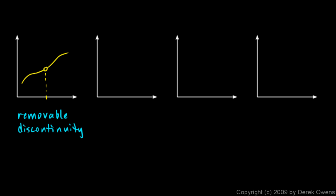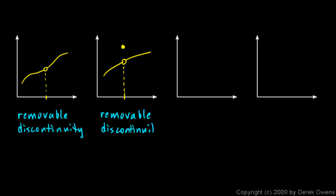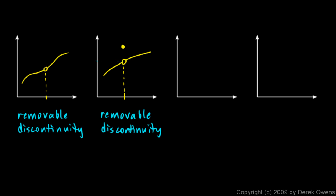On the next graph, imagine a function where there's a curve that has a value everywhere except at one point, and at that point it actually has a value, but the value is off the rest of the curve. This is also called a removable discontinuity, because once again we could define the function using piecewise notation — this function for all other values of x, then redefine the value at that particular x value so that the discontinuity is removed.